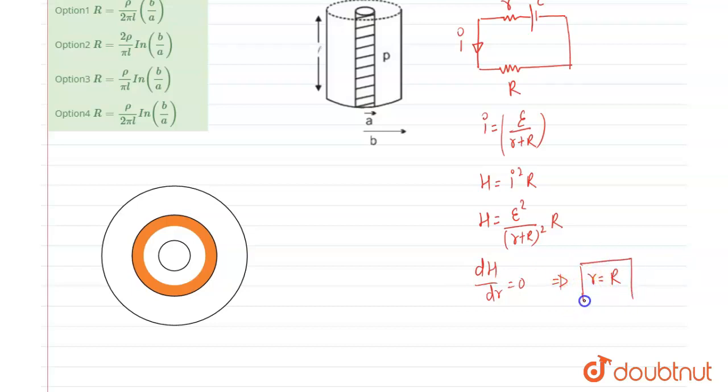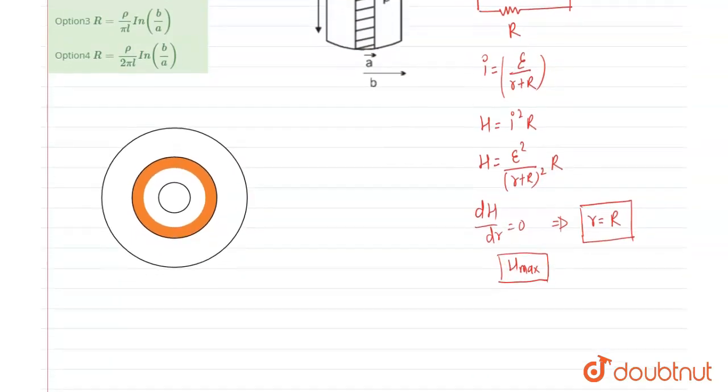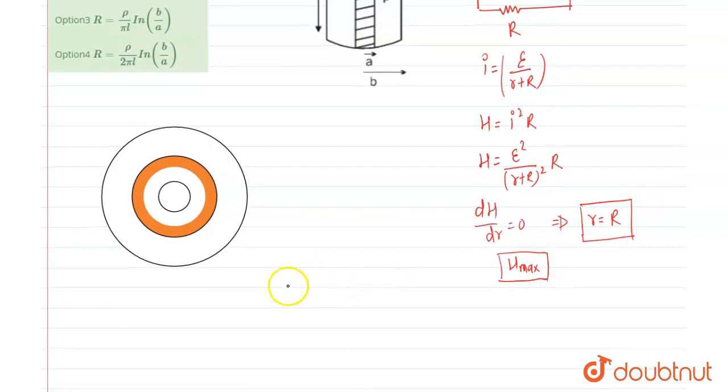At that point when internal resistance is equal to external resistance, in that condition heating is maximum. So we have to find the internal resistance of the cell and that internal resistance is equal to external resistance for maximum heat produced.